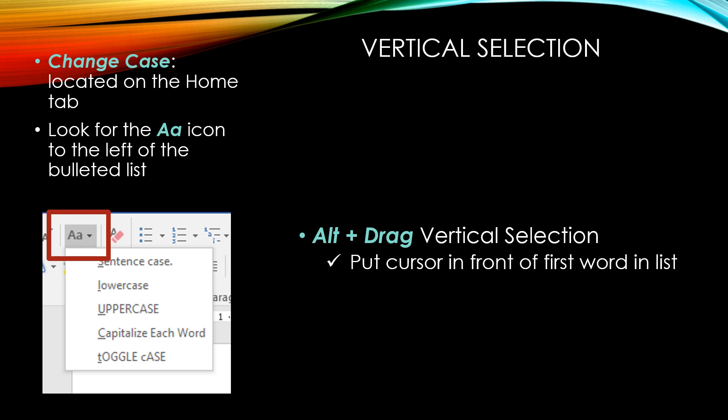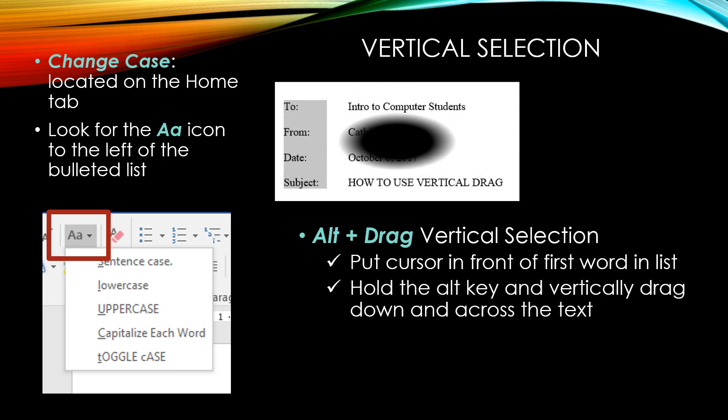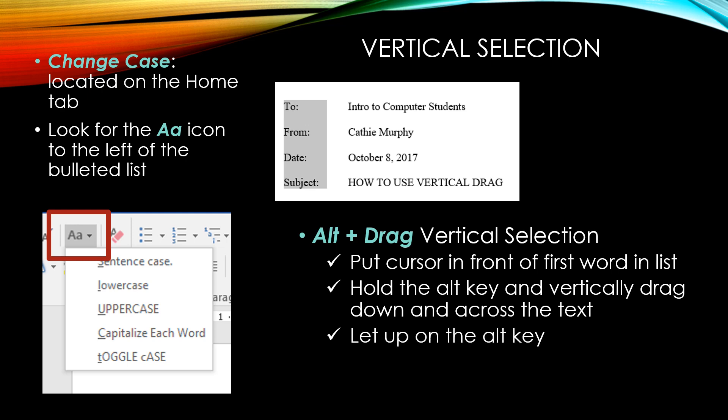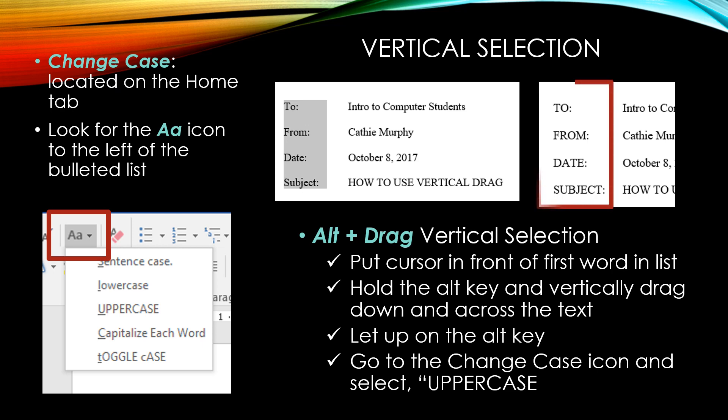We are going to do this by putting our cursor in front of the first word in the list — in this case, the first word would be To. Then you are going to hold down the Alt key and vertically drag down and across the text until you have the words To, From, Date, and Subject selected. Then let up on the Alt key. Then go to the Change Case icon and select Uppercase. When you are done, To, From, Date, and Subject are now all in uppercase.